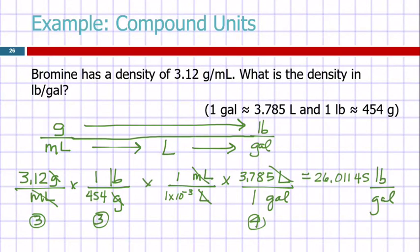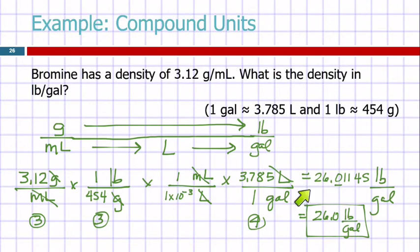From the given relationships: 1 pound ≈ 454 grams; 1 gallon ≈ 3.785 liters; and milli means 1 × 10⁻³. Calculate: 3.12 times 1 divided by 454, times 1 divided by 1 EE minus 3, times 3.785 divided by 1, equals approximately 26.01. The metric conversion is exact; the 454 grams has three sig figs; 3.785 liters has four sig figs; starting number has three sig figs — answer should have three sig figs: 26.0 pounds per gallon.